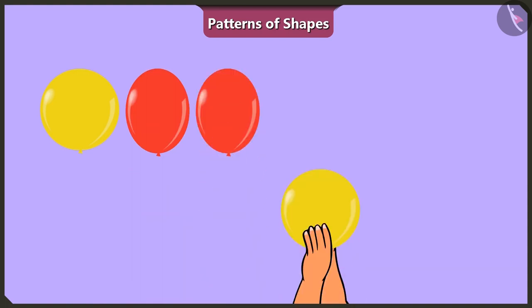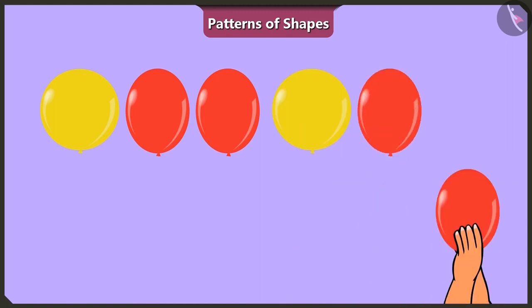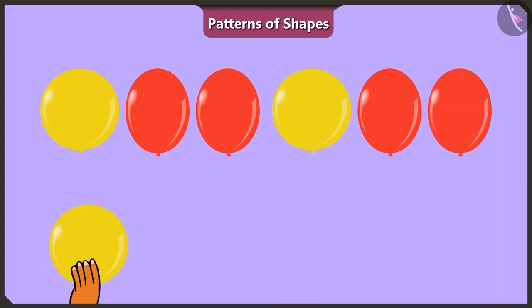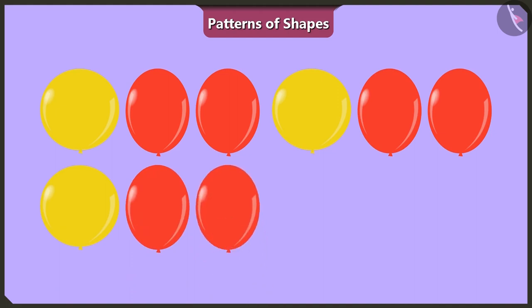Then, one yellow spherical balloon and two red oval shaped balloons. Then, one yellow spherical balloon and two red oval shaped balloons. Let's continue with this sequence.